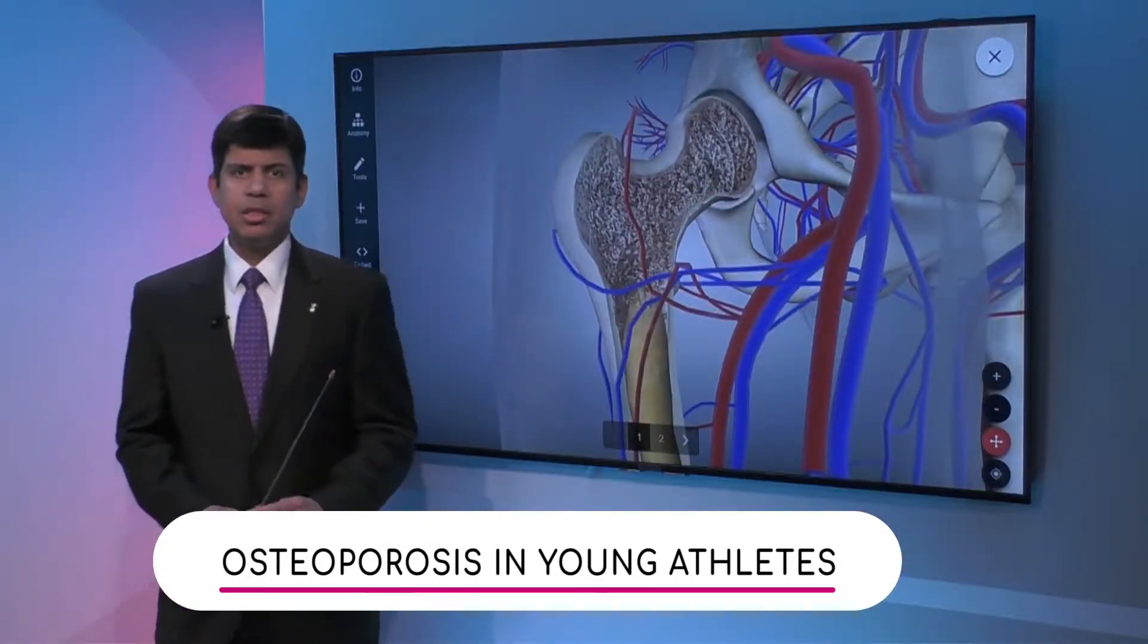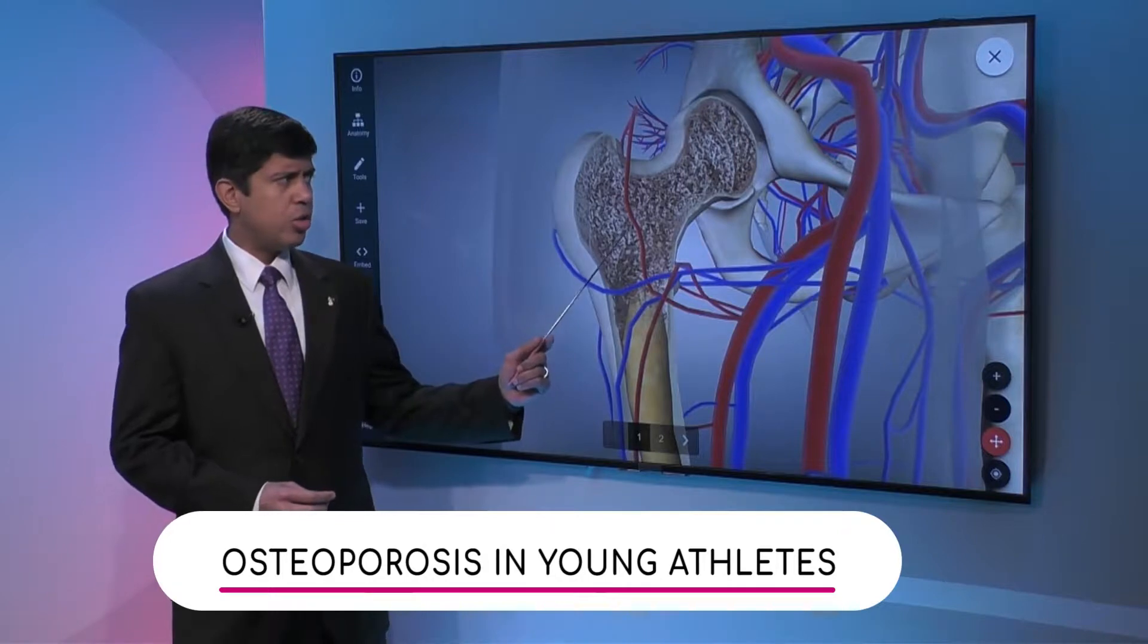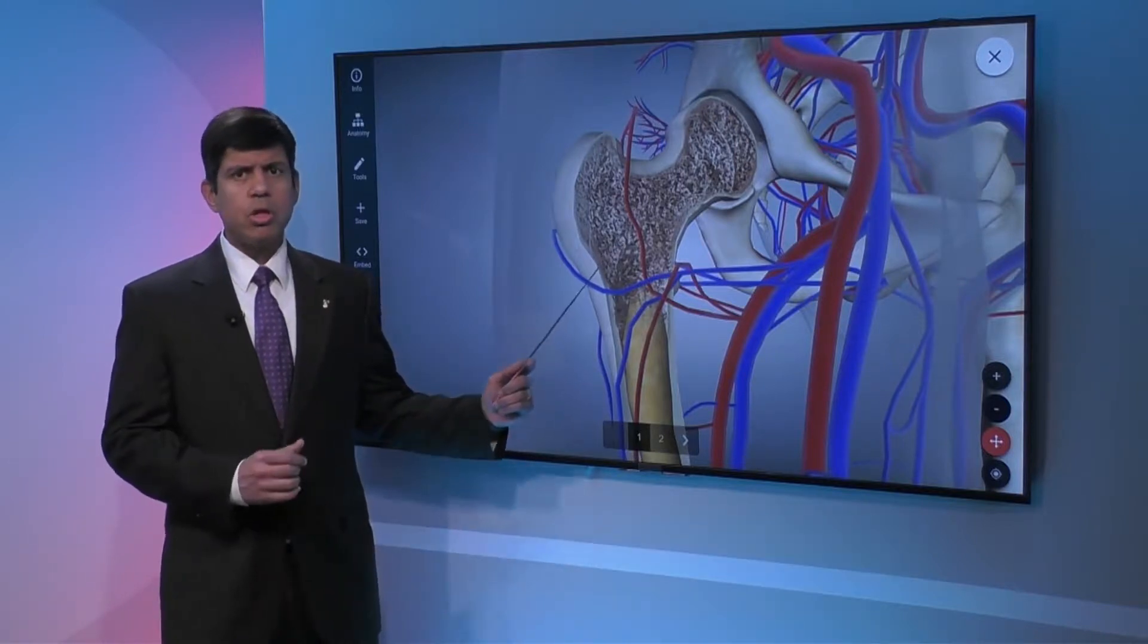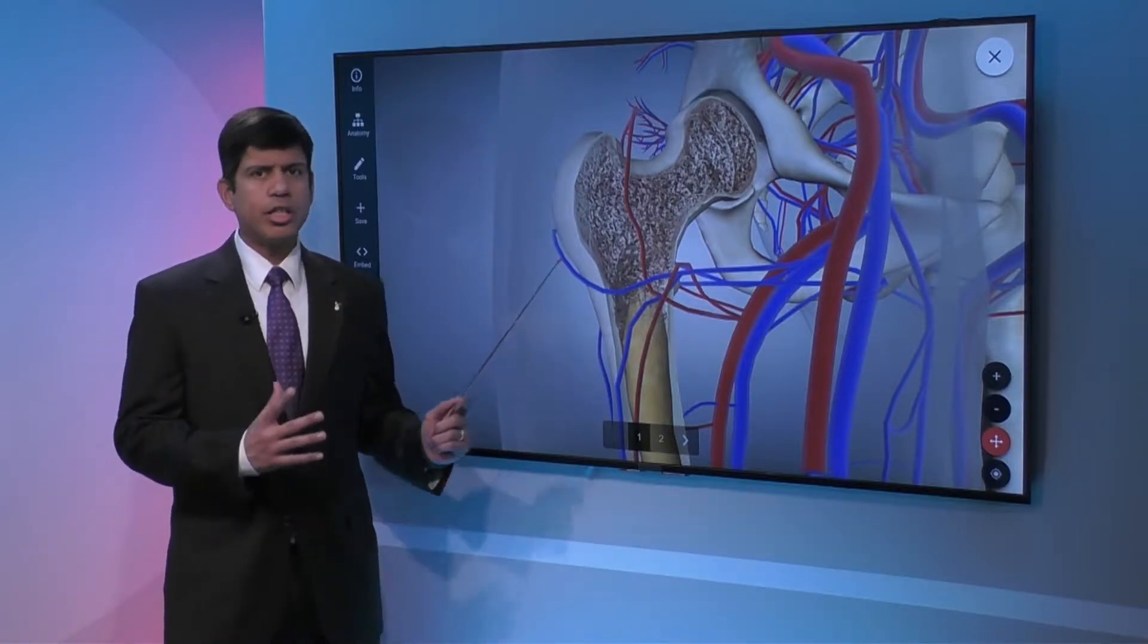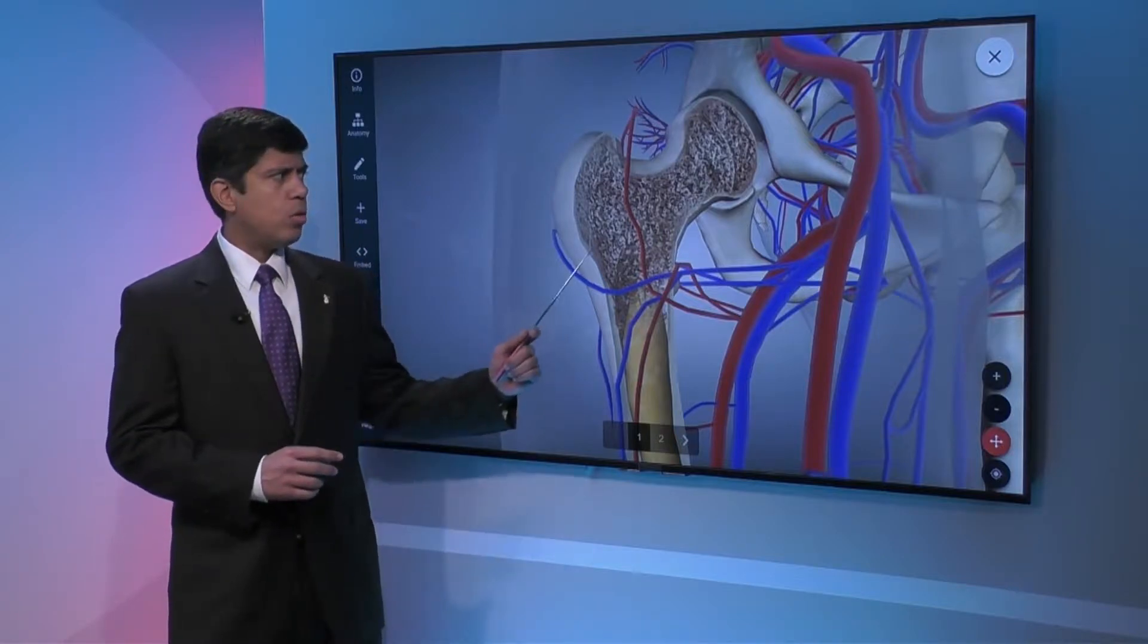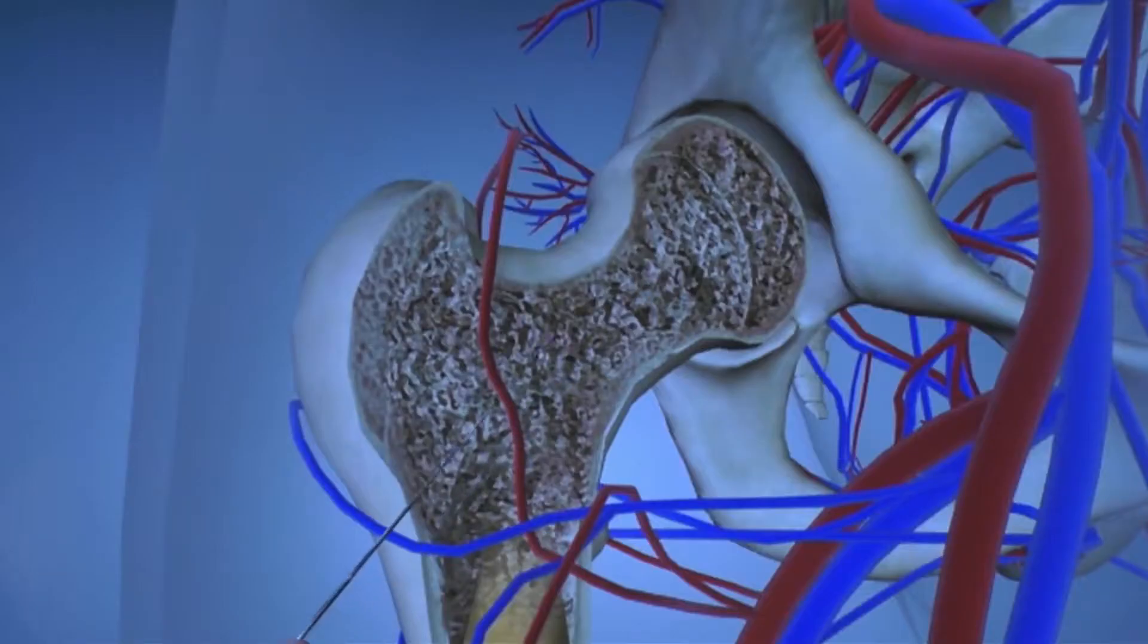Osteoporosis is a disease that affects the composition of our bones, so the inside of our bones is what we're talking about here, the inner architecture of the bone. When we have normal bone mass, that inner architecture is nice and compact and strong.